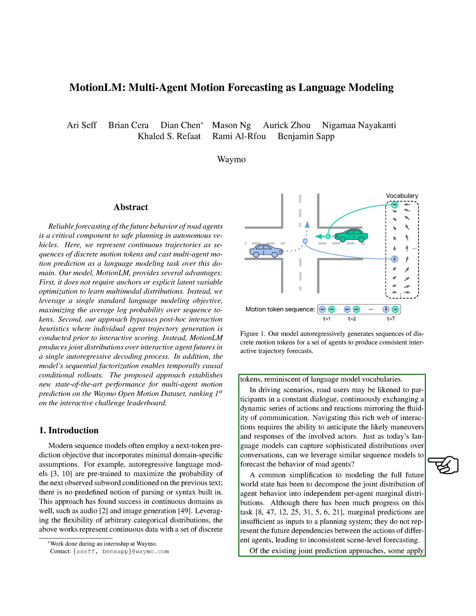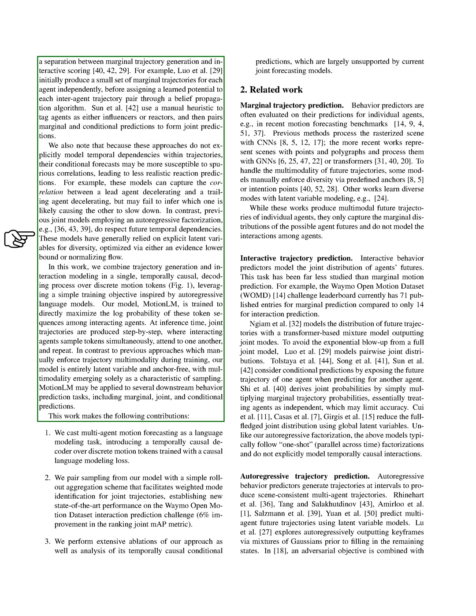Some existing joint prediction models separate the generation of marginal trajectories and interactive scoring. For instance, they might first generate a small set of marginal trajectories for each agent independently, then assign a learned potential to each pair of inter-agent trajectories using a belief propagation algorithm. These models can capture the correlation between a leading agent decelerating and a trailing agent decelerating, but they may fail to infer which one is causing the other to slow down.